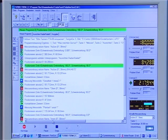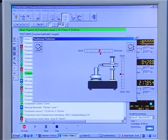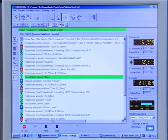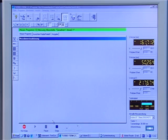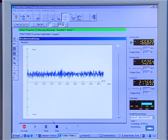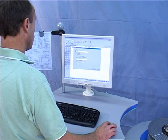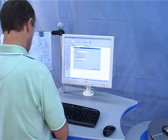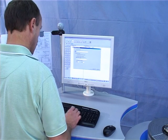The Hommelwerke software Turboform allows evaluation and display of all form and position parameters and features, plus the assessment of all common roughness, profile, waviness and twist parameters. An integrated programming help guides the operator simply and clearly through all the necessary steps.